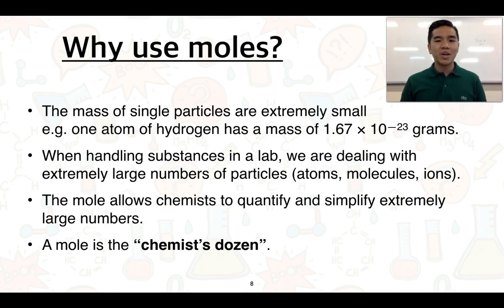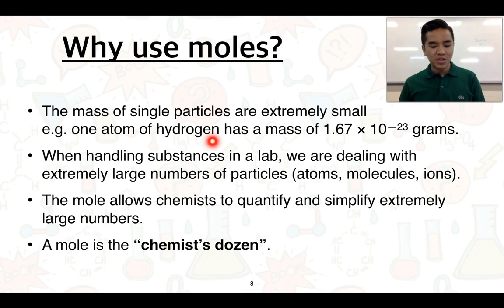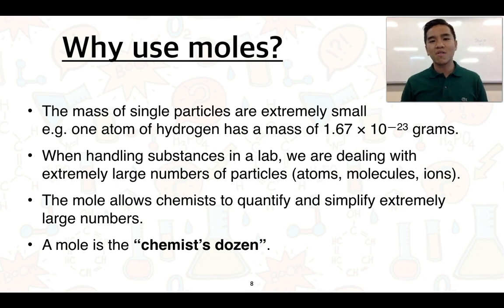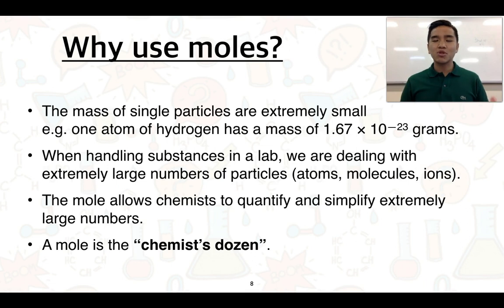A question might be: why do we actually use the mole? Keep in mind that if we look at trying to measure the mass of individual particles, the mass is actually extremely small. One atom of hydrogen has a mass of 1.67 × 10⁻²³ grams. In a lab we're often dealing with extremely large numbers of those particles, so what the mole allows chemists to do is quantify and simplify extremely large numbers — to keep track of how much of a particular substance we have. I like to think of the mole as the chemist's dozen.